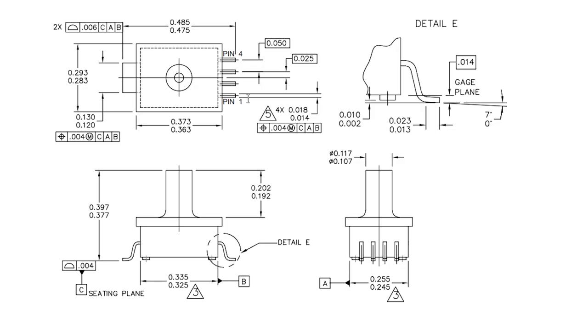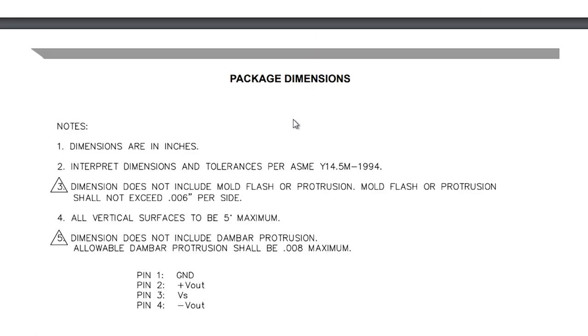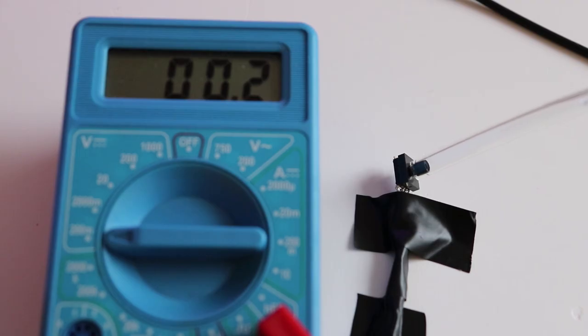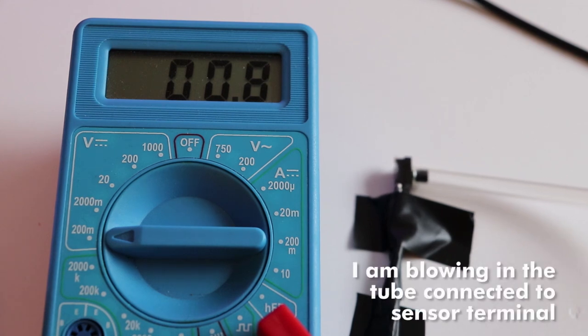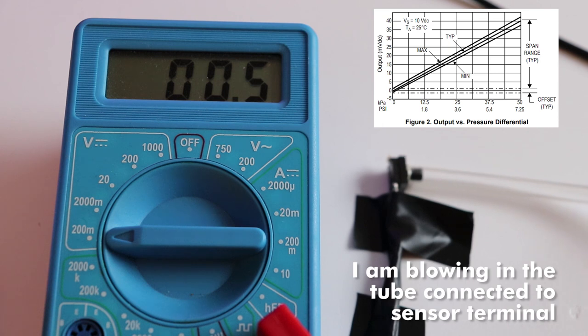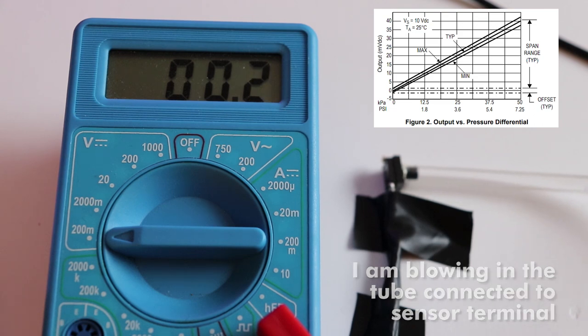The sensor is powered by 10 volts and has two output signal pins. Right after connecting the sensor to power and multimeter, the first problem appeared. Output voltage at zero pressure difference is only 0.2 millivolts. It is not zero due to sensor offset, and even after blowing directly into the terminal it does not exceed 1 millivolt.